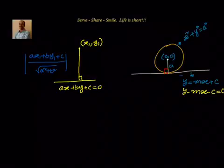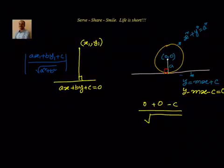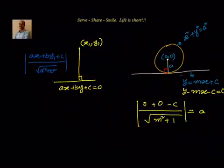Substituting in this formula, this line is nothing but y minus mx minus c equal to 0. We substitute the values — x1 y1 is 0 — so we will have 0 plus 0 minus c divided by root of a square, where a square is minus m whole square, that is m square plus b square which is equal to 1. This should be equal to the radius, because when the tangent touches the circle the distance from the center to the point of contact is the radius.